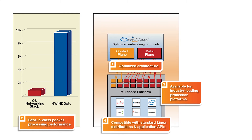6Wingate is fully compatible with a wide range of Linux kernels, including commercial distributions from suppliers like Red Hat, reference distributions from processor suppliers, and kernel.org for roll-your-own implementations. 6Wingate is also fully compatible with standard Linux application APIs, which guarantees the maximum reuse of existing software and minimizes the schedule risk for a new project.